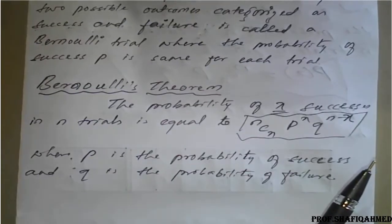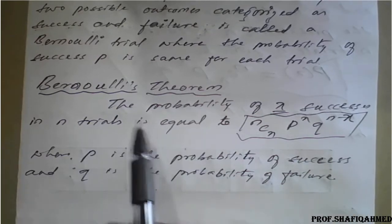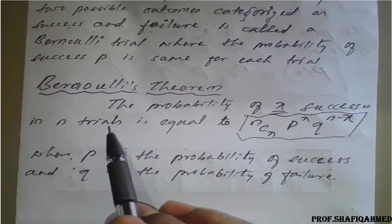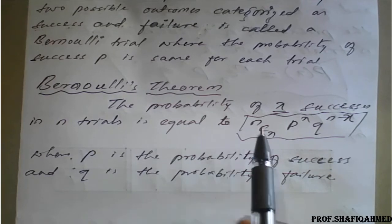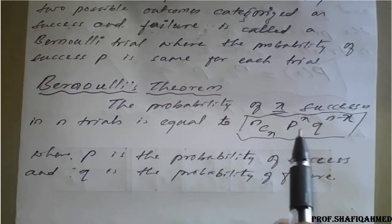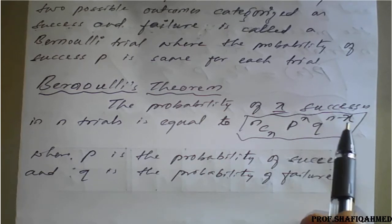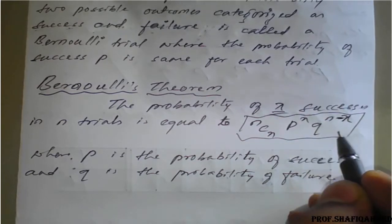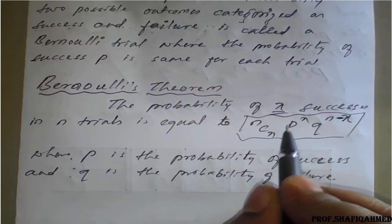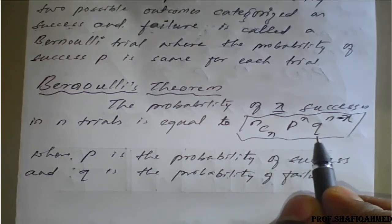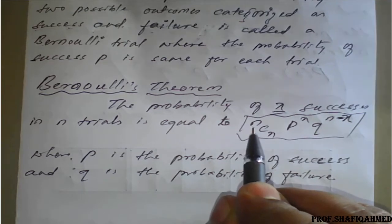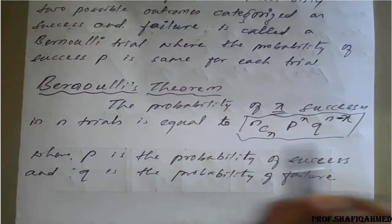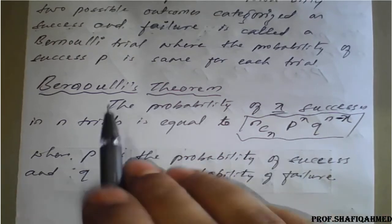I want to introduce the next concept called Bernoulli's theorem. The probability of X successes in N trials is equal to NCX times P raised to X times Q raised to N minus X, where P is the probability of success and Q is the probability of failure, and N is the number of trials. X is the event. This is described and given as Bernoulli's theorem.